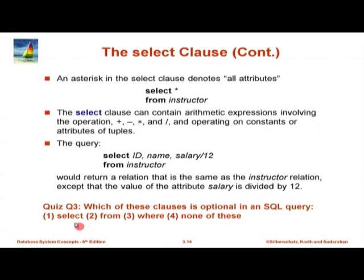A quiz question: which of these clauses is optional in an SQL query — SELECT, FROM, WHERE, or none of these? The query just shown has no WHERE clause, so that is clearly optional. Is SELECT optional? No — any query has to return something; the SELECT shows what attributes or values are returned. FROM is also not optional in SQL — it should be present. So the answer is WHERE.